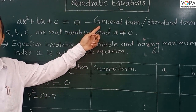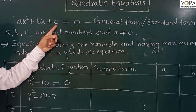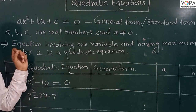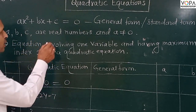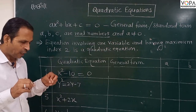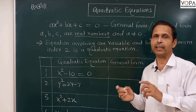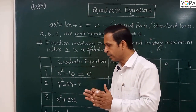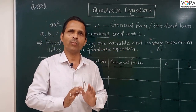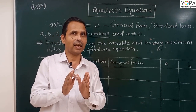Here a, b, c are called coefficients. These coefficients are real numbers — meaning the actual numbers. Real numbers include rational numbers or irrational numbers. Whether a number is rational or irrational, both are included in real numbers.